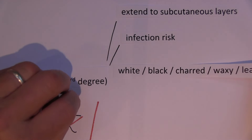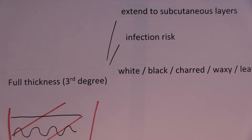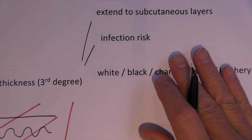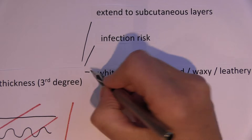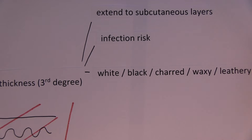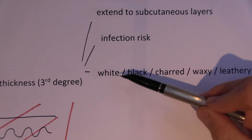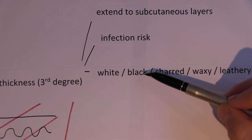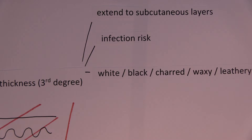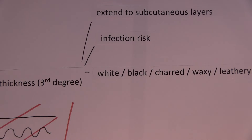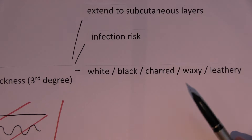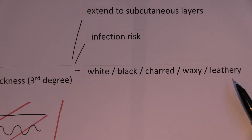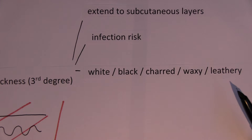The appearance of full thickness burns can be variable. Very often they look white, especially initially, depending on the cause. Other times they're charred — if it's pure heat there's nothing to blacken it really. Very often they look like a dead waxy sheet of tissue, but they can also appear black and charred, or have a leathery appearance like old leather.